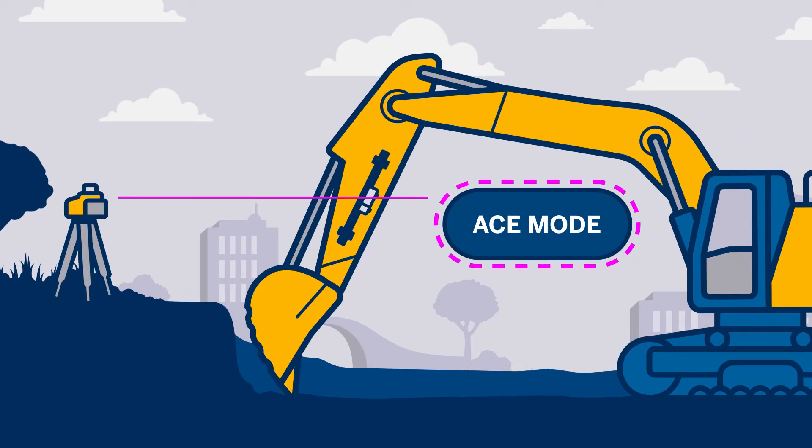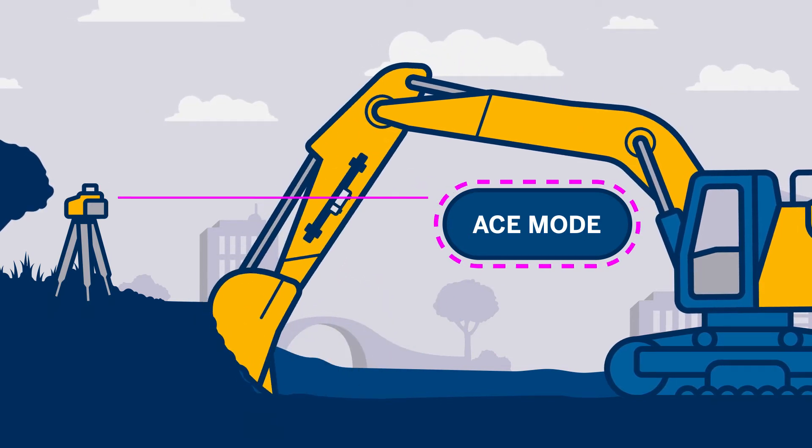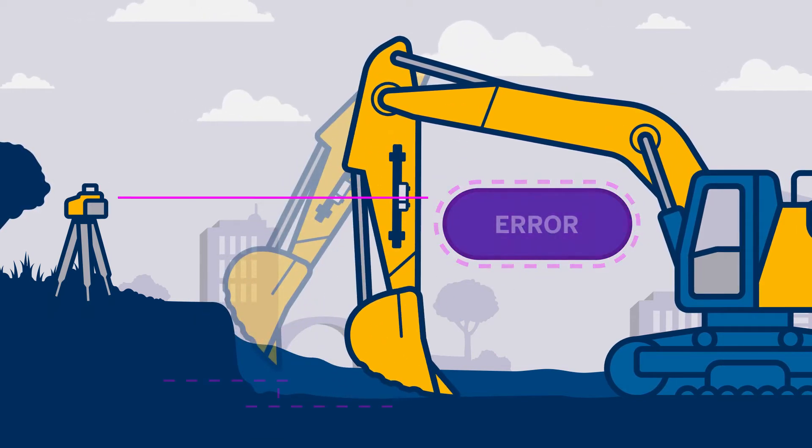When the dipper arm pivots about the pin that connects the boom and the dipper arm, there's an inherent error as the arc of the swing lifts the bucket from the initial position.